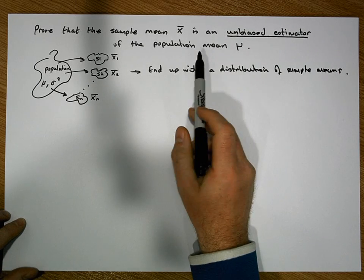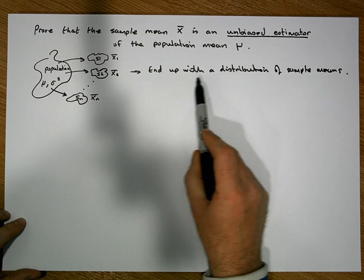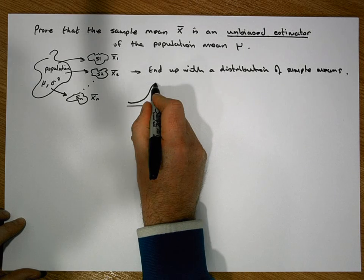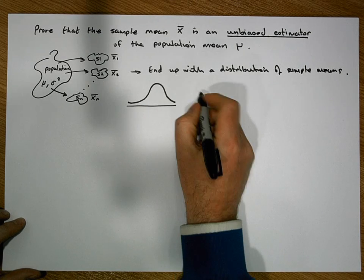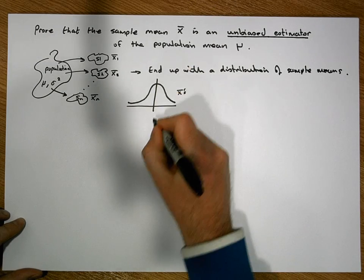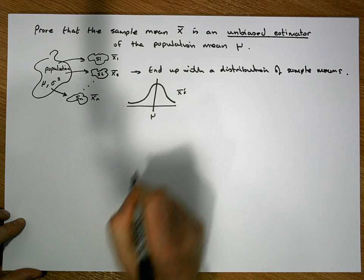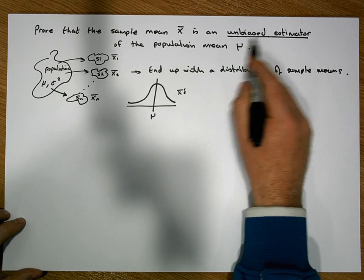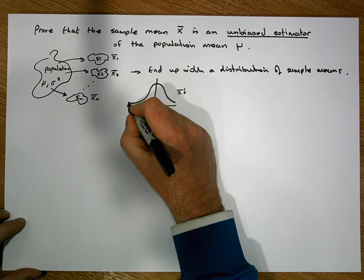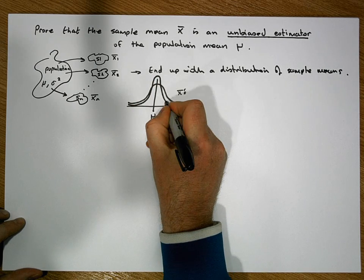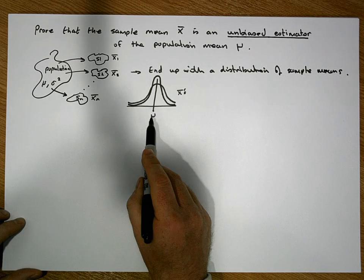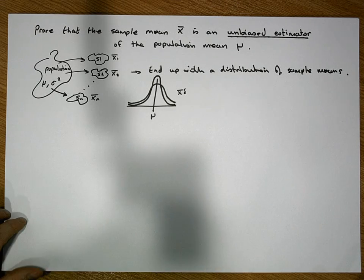When we say that the sample mean is an unbiased estimator, what we mean is that this distribution of sample means — when we take n samples of our x-bars and plot the distribution — the expected value of this distribution is the population mean mu. It's unbiased in the sense that no matter how many samples we take, all of these distributions will have a mean value of mu, the population mean.